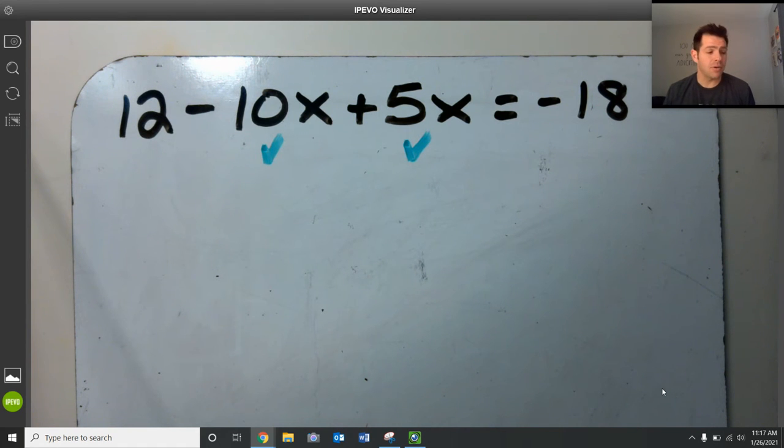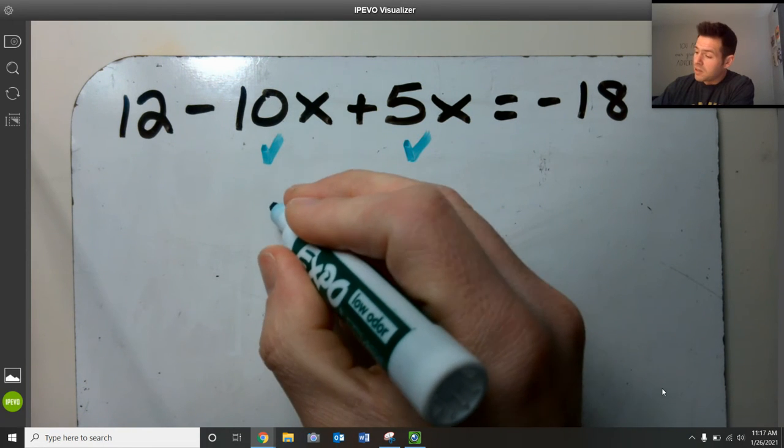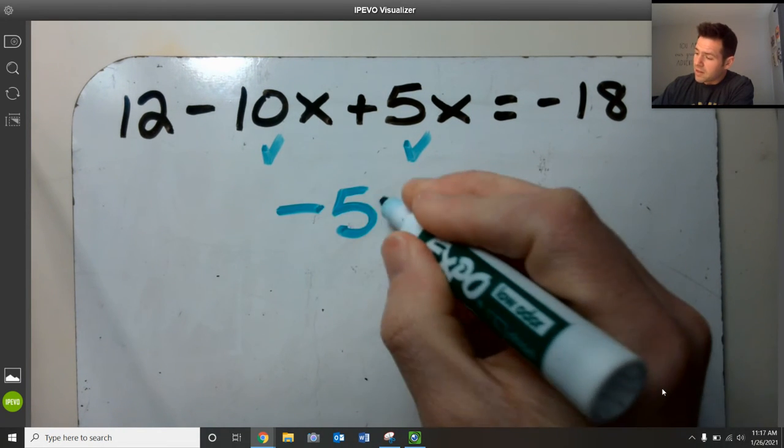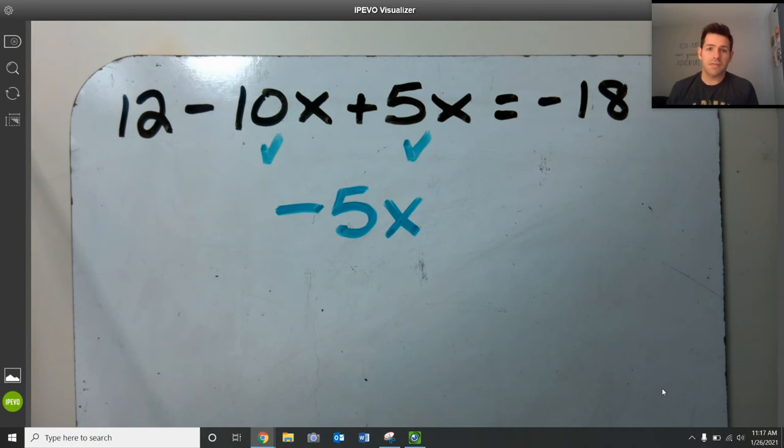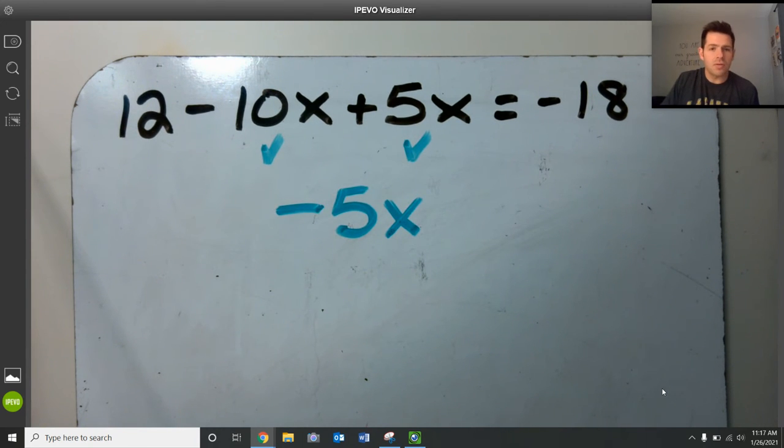I'm going to do minus 10x plus 5x. So minus 10x plus 5x, negative 10 plus 5 would be negative 5x. So that was me combining these two terms right here, negative 10x plus 5x, doing exactly what it is that the problem told me to do.